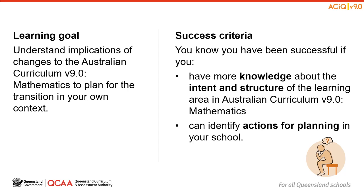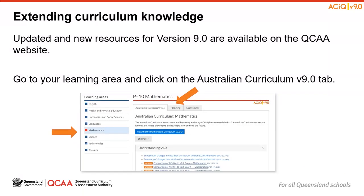As the session comes to a close, let us reflect on our learning goal and success criteria. We have built our knowledge about Australian Curriculum Version 9 for Mathematics and identified some actions for planning in our particular school context. Before you begin the next session, you may wish to access the location noted on screen to extend your curriculum knowledge. There are many resources located here that will support you in planning for the transition. These can be accessed by going to the landing page for Mathematics and then clicking on the Australian Curriculum Version 9 tab.